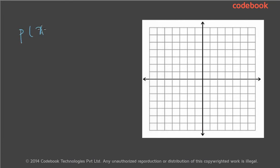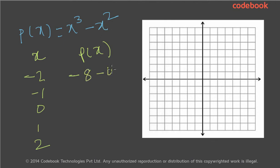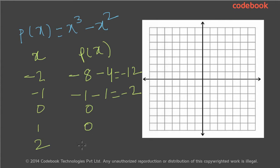Now let's look at another example. P of x is equal to x cubed minus x squared. Let's compute p of x for various values of x: minus 2, minus 1, 0, 1, and 2. When x is minus 2, p of x becomes minus 2 cubed minus minus 2 squared, which is minus 8 minus 4, giving minus 12. When x is minus 1, it is minus 1 minus 1, which is minus 2. When x is 0, it is 0. When x is 1, it is 0. And when x is 2, it is 8 minus 4, which is 4.